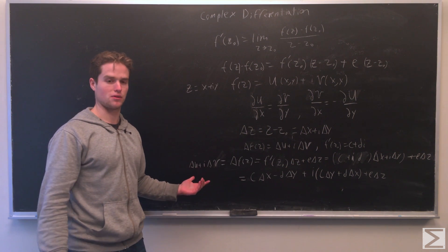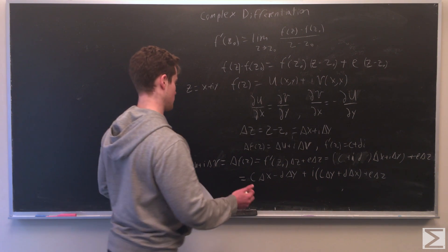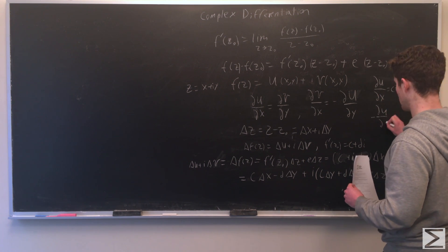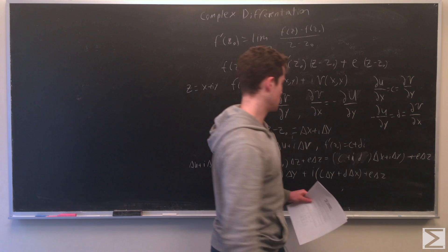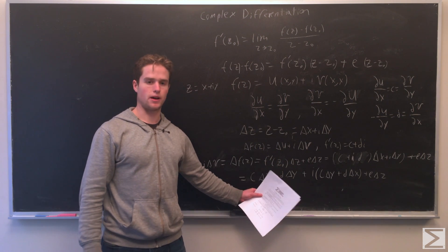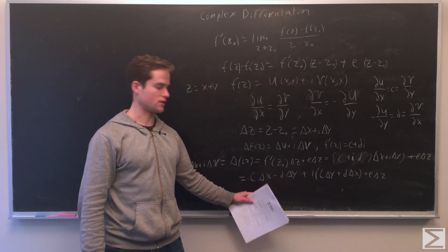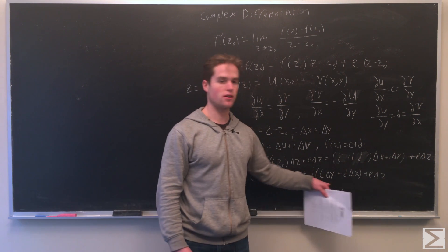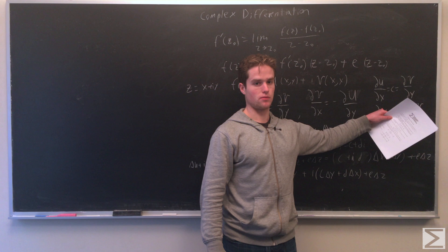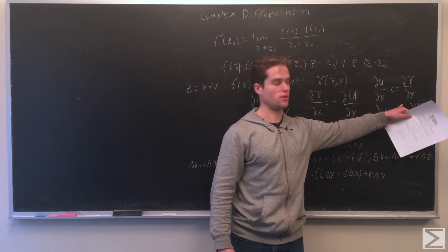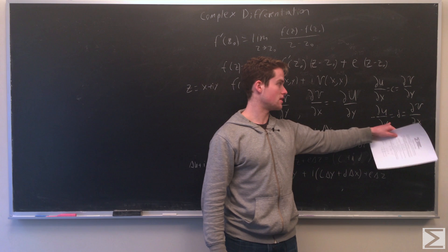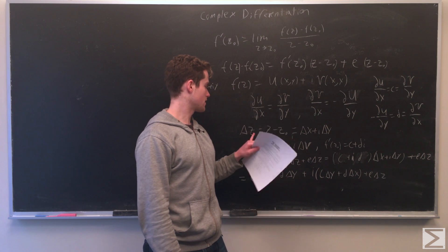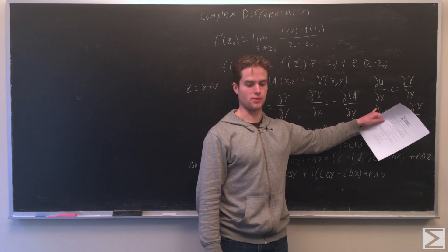The real part corresponds to delta u and the imaginary part corresponds to delta v. Comparing these two and knowing that we are dealing with differentials, we arrive at: partial u partial x equals c, which also equals partial v partial y, and negative partial u partial y equals d, which also equals partial v partial x. So assuming that f(z) is differentiable, we can show that the Cauchy-Riemann equations are in fact satisfied.